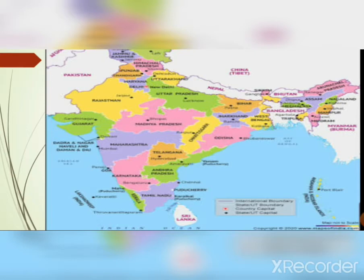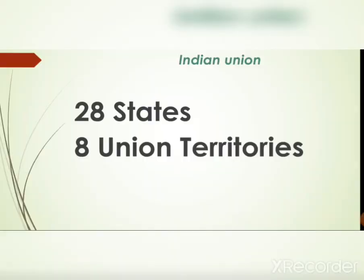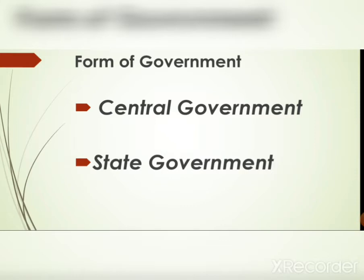All the states and union territories are together called the Indian Union. Since our country is a very big country, there is a requirement of a new form of government which can manage the whole country. The power of the central as well as the state government has been developed, and we will learn about that formation of government in this chapter. The form of government is basically a dual form of government, consisting of the central government and the state government.